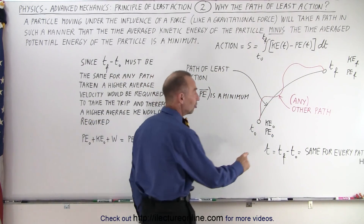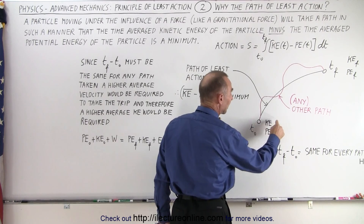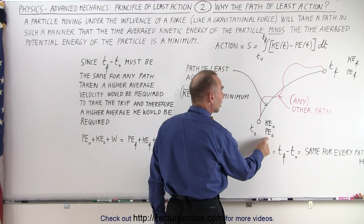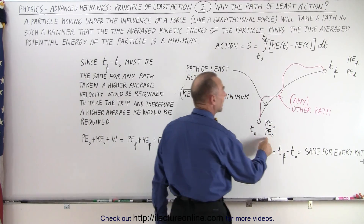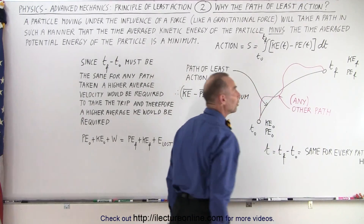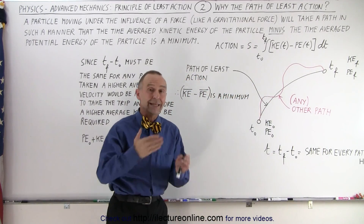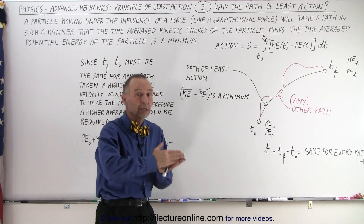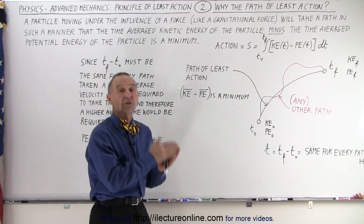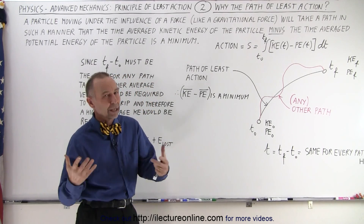Notice that initially the particle will have some initial kinetic energy and some initial potential energy. At the end, it will have a final kinetic energy and a final potential energy. Typically, kinetic energy will be converted to potential energy, or potential energy will be converted to kinetic energy, depending upon what the particle is doing.